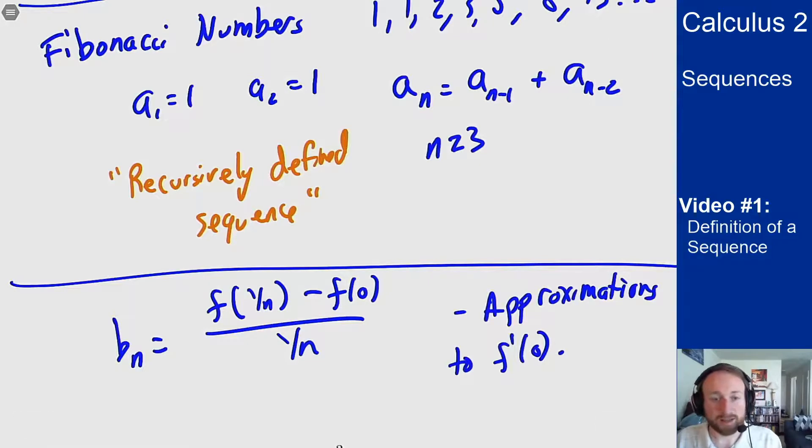When you think about plugging in smaller and smaller numbers to approximate a derivative, this is what you're doing. You're doing a sequence and using that to give you an idea of what's going on.